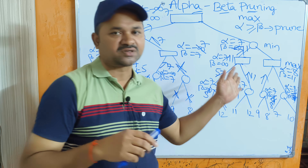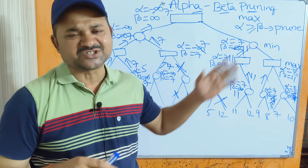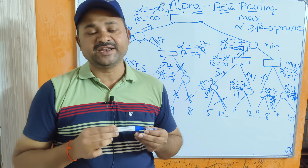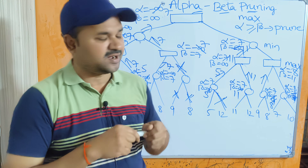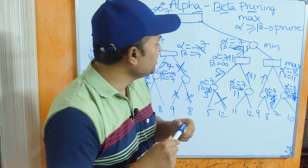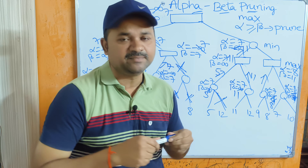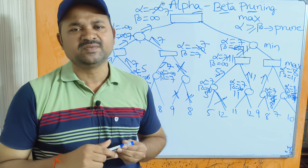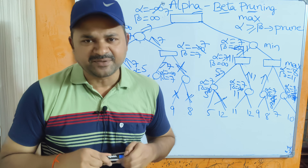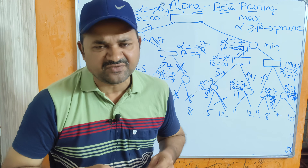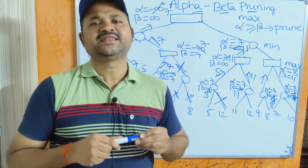This is the final solution. In this way we can solve any problem using alpha-beta pruning very easily. Please like the video, subscribe to the channel, and share with your friends. Thanks for watching.